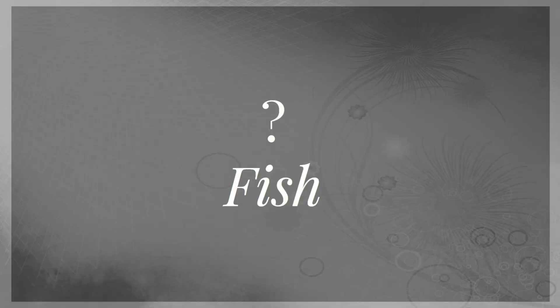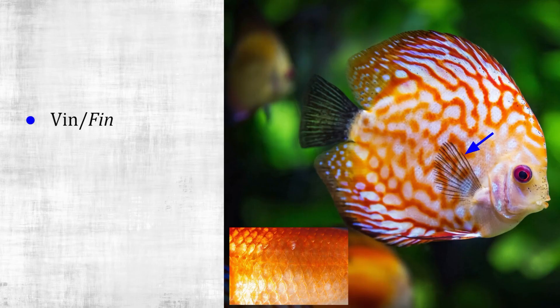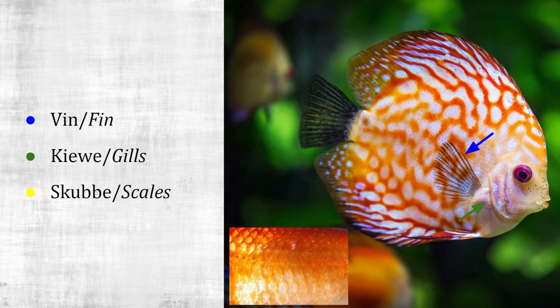Fish. Can you remember what this is called in Afrikaans? Vin — fin. And in English it's pretty much the same: fin. Kiver — gills. Skubbe — scales.